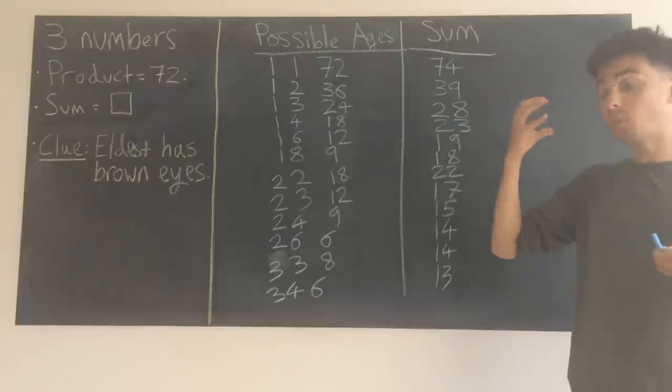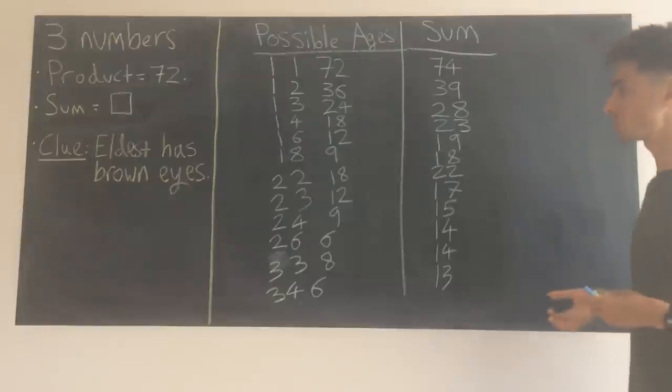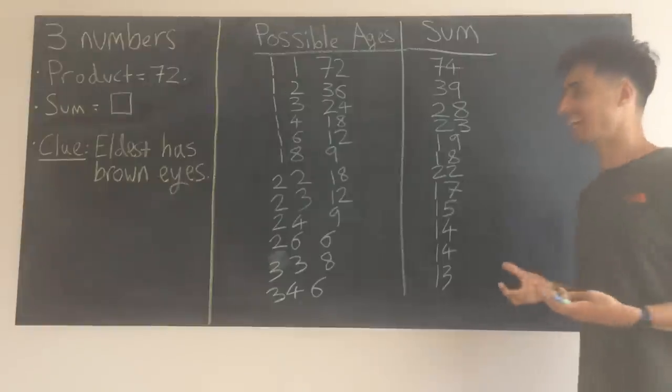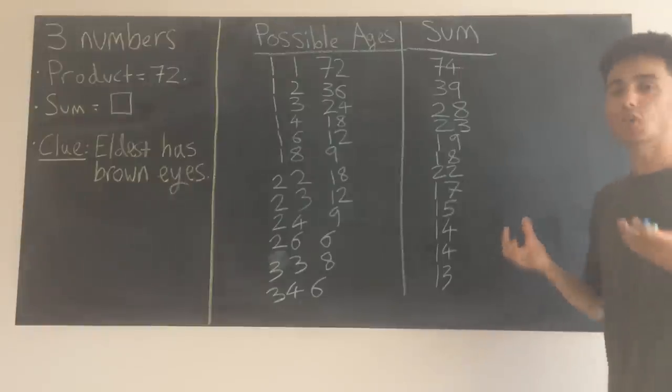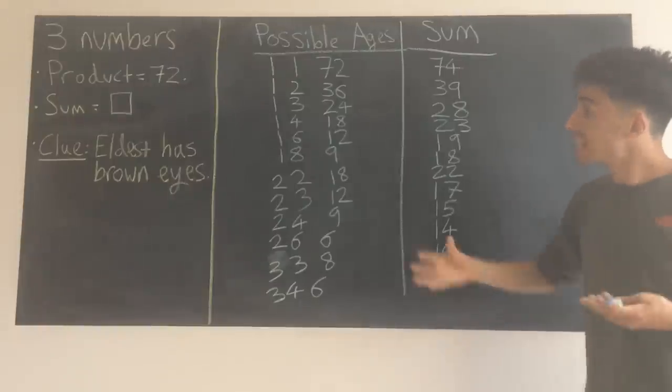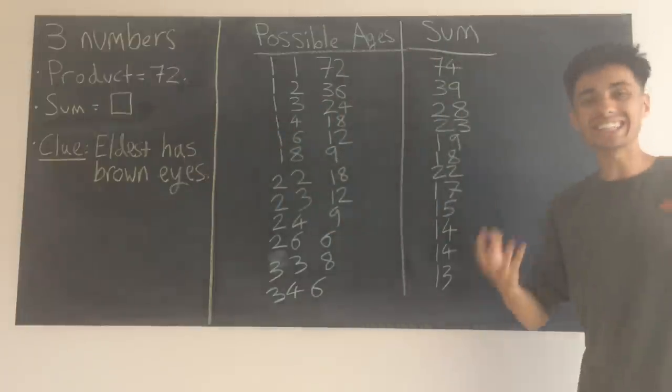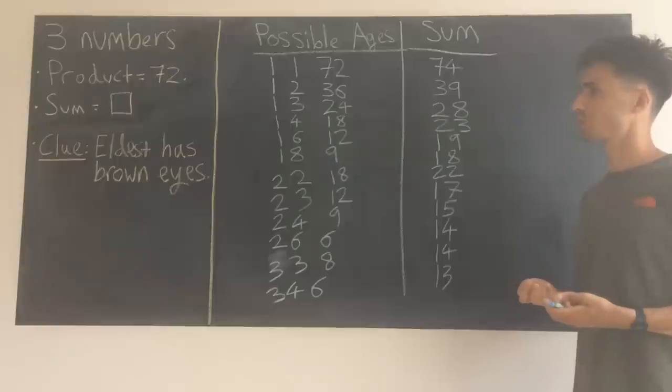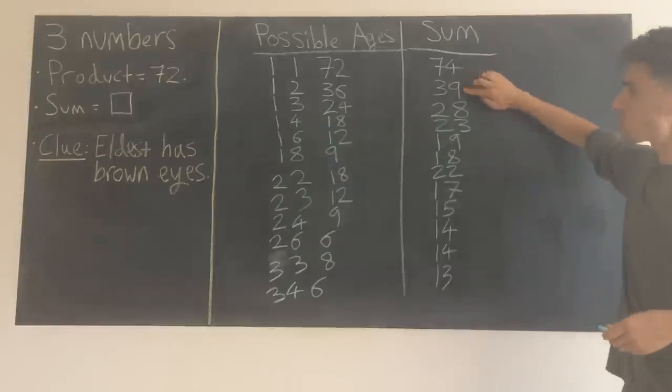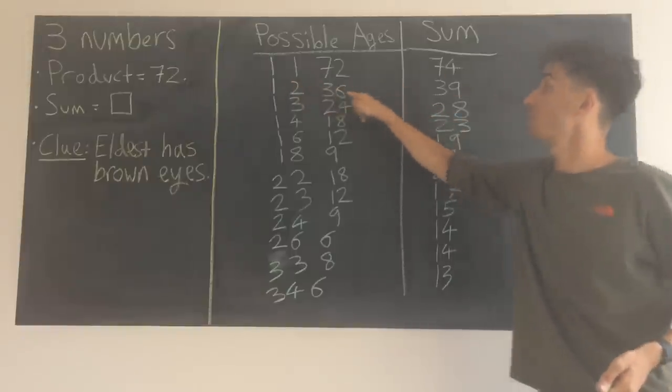This is the part where we need to put ourselves in the mind of that second mathematician, because he came back and he said, I just don't know. I've seen the house number, which is one of these numbers, and I still don't know their ages. Let's consider a couple of possibilities. If the house number was 39, there's only one way to make that. It has to be 1, 2 and 36.